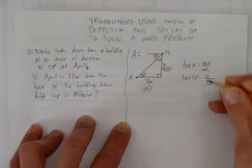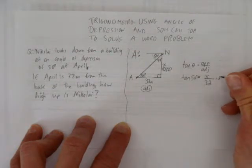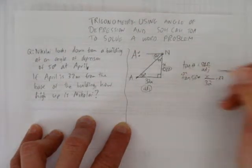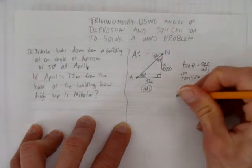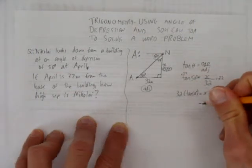How do you get x by itself? Well, do the opposite of what's happening to it. It's being divided by 32. We're going to times both sides by 32. And we get x equals 32 times the tangent of 50 degrees.